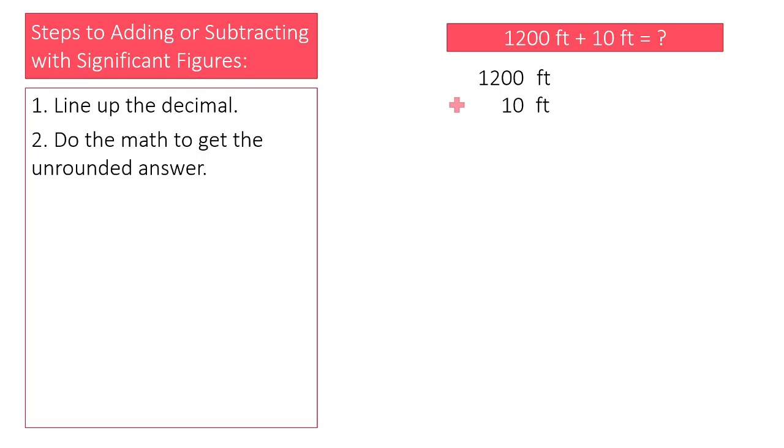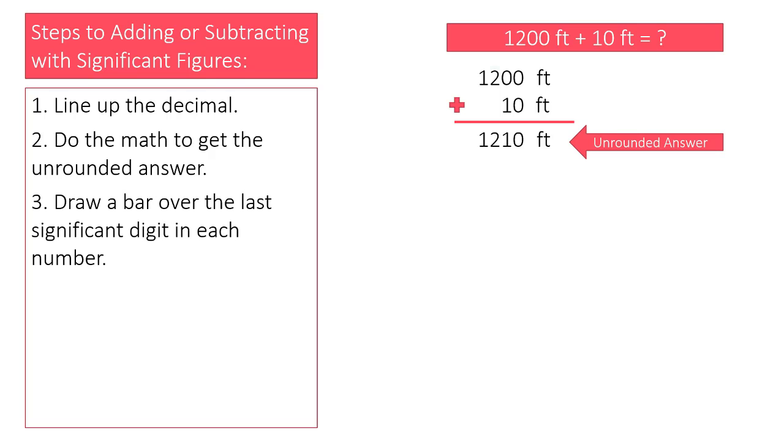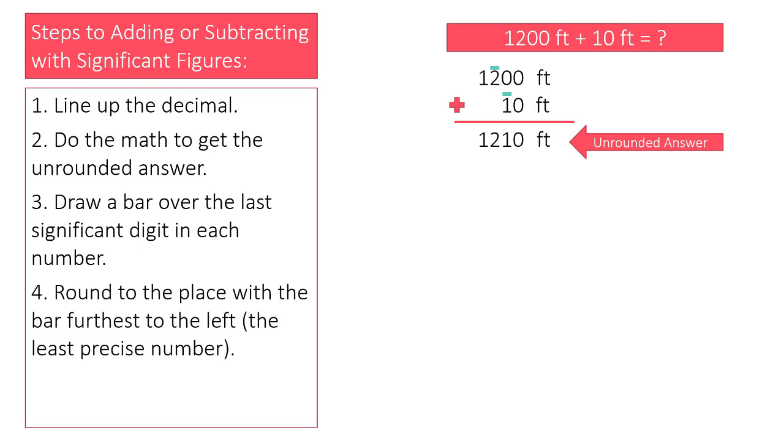Now I'm going to do the math to get the unrounded answer. Next comes the bars, which go over the last significant digit in each of our numbers. We will round to the place with the bar farthest to the left. In other words, we are rounding to the same precision as the least precise number. That would be the 2 in the hundreds place.